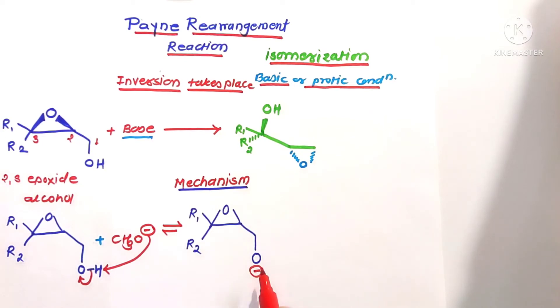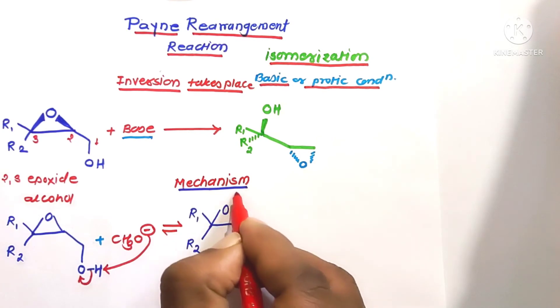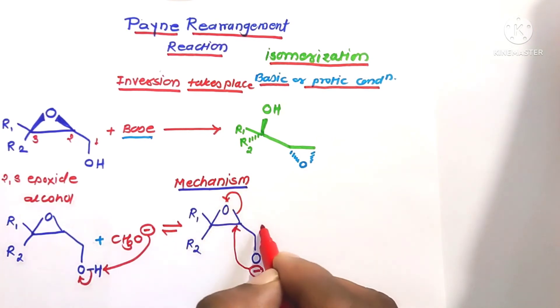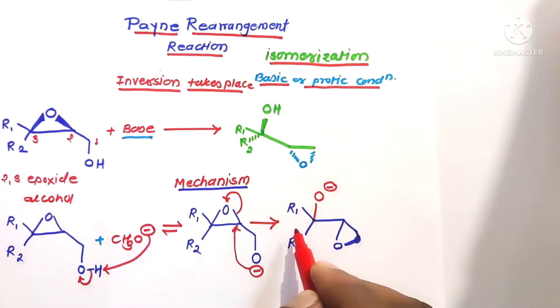This acts as internal nucleophile and attacks from the remote side to open up this epoxide ring. This oxygen containing non-bonded pair of electrons attacks toward this carbon atom, and then this bonding electron shifts to this oxygen atom to form molecule.